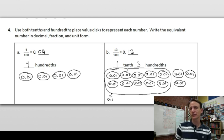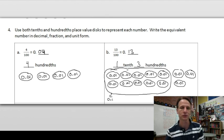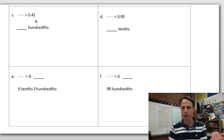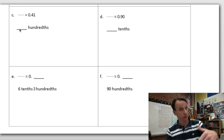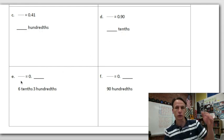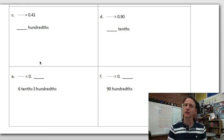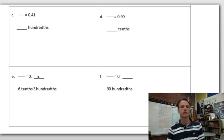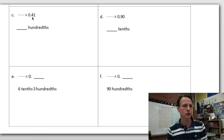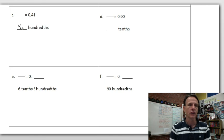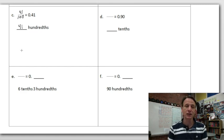Parts C through F mix it up a bit. In C and D they give us the decimal form and we write the fraction and unit form. In E and F they give us unit form and we write fraction and decimal. So 0.41 — reading that as a number: 41 hundredths. Write the fraction: 41 over 100. Now for the discs, I'm not drawing 41 pennies — instead I'll draw four tenths and one hundredth.